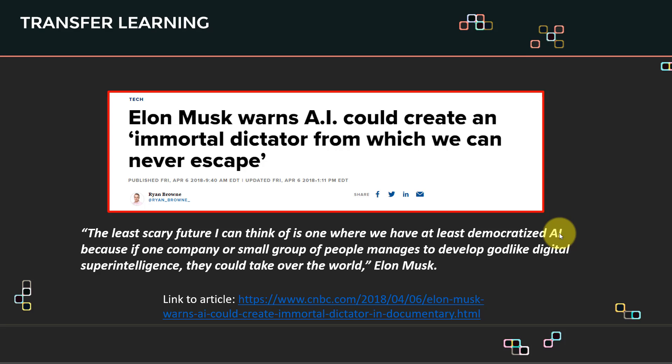AI could create an immortal dictator from which we can never escape. So what he mentioned is that the least scary future he could think of is when we have at least democratized AI. Simply, that's a scenario when AI is not concentrated in the hands of a small group of people, because if that's the case, then they are like godlike, they have super intelligence and super power that you cannot defeat.